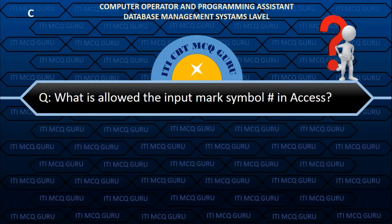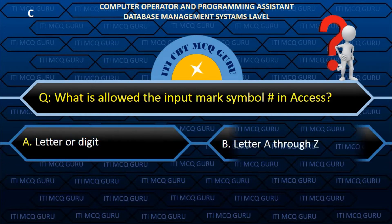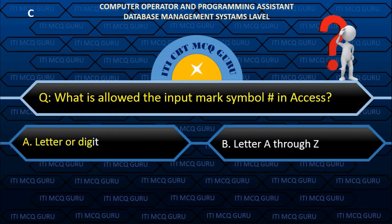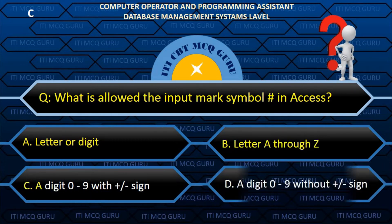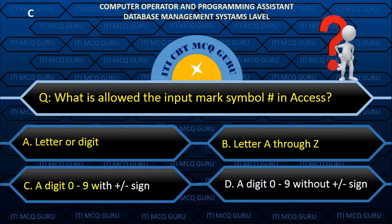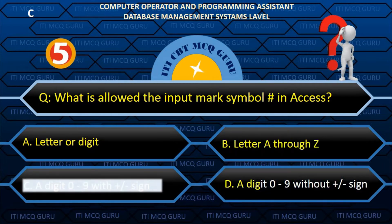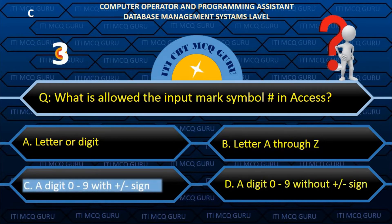What is the allowed input mask symbol in Access? C. A digit 0 to 9 with plus/minus sign.